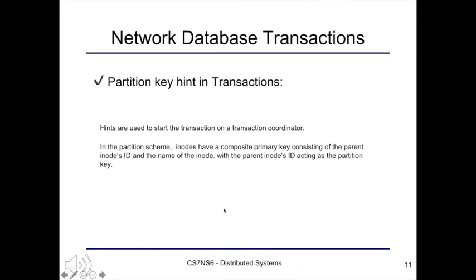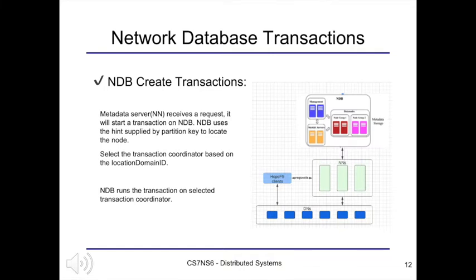Hints are used to start the transaction on a transaction coordinator. In the partition scheme, a node has a composite primary key consisting of parent inode ID and the name of the inode, with the parent inode ID acting as the partition key. When a metadata server in HopsFS receives a request, it will start a transaction on NDB. NDB first uses the hint supplied by the HopsFS partition key to locate the nodes that host the partitions for the transaction data.